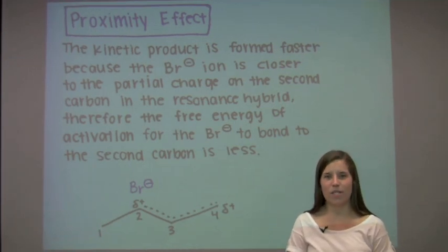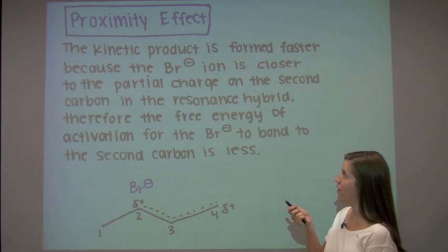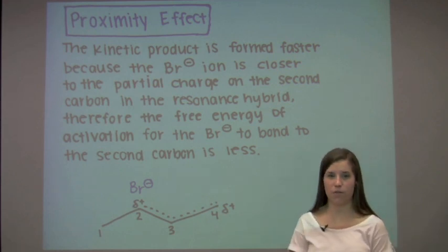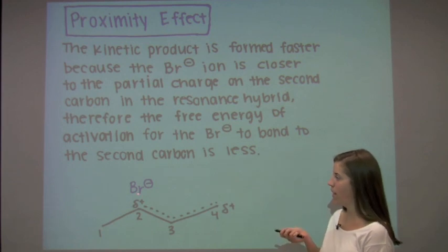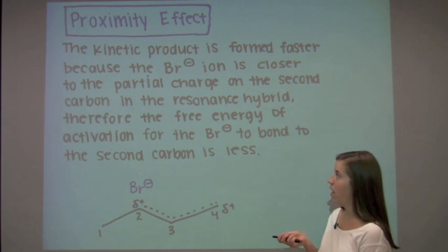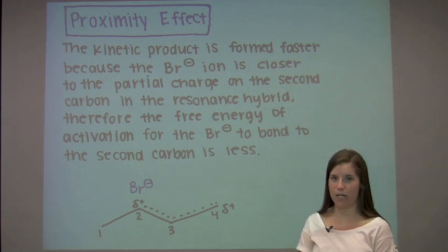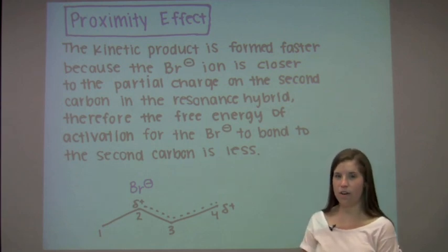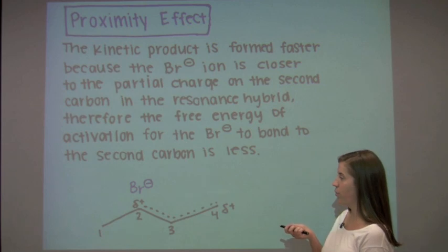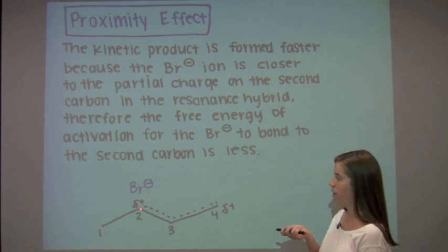Now I'm going to explain why the kinetic product is formed faster. One factor is the proximity effect. The kinetic product is formed faster in part because the bromide ion is located close to the partial positive charge on the second carbon after the hydrogen bromide protonation. Therefore, the free energy of activation required for the bromide ion to bond at the second carbon is less.